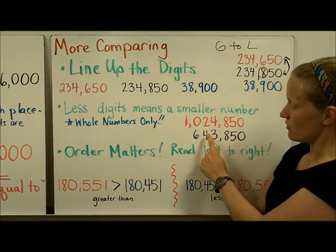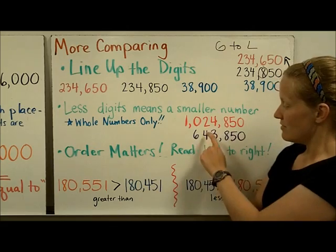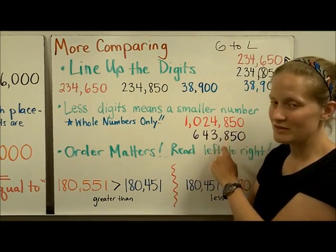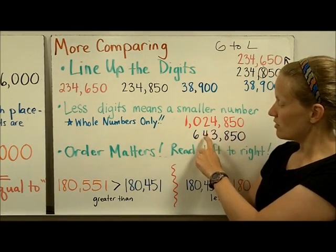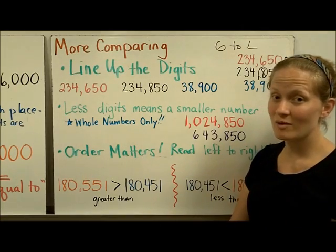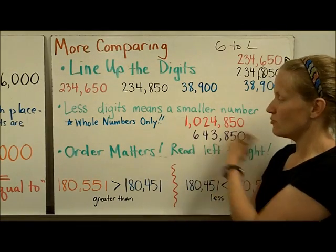This number has 1, 2, 3, 4, 5, 6 digits. This whole number, which means no decimal, is smaller than this one. I don't even have to do any other comparing because this one has more digits.